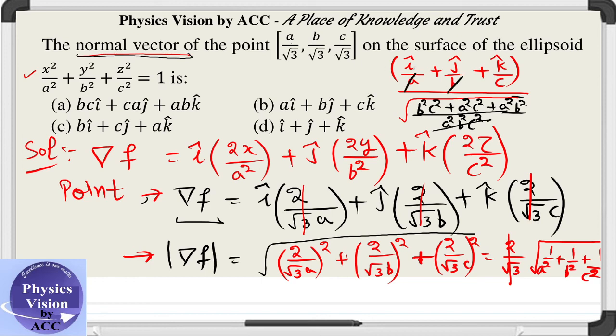You can see the under root of a squared b squared c squared is abc. When you multiply, you will get bc in the first term, ac in the second term, and ab in the third term divided by this. So option a seems to be matching to the maximum. If we divide it with the magnitude of the above vector, this will be the answer.